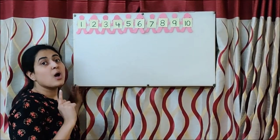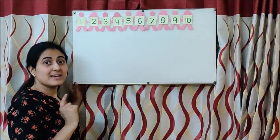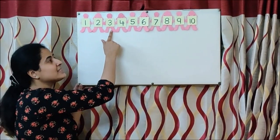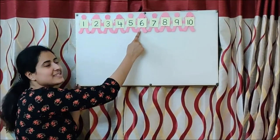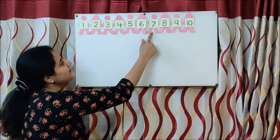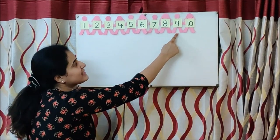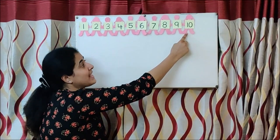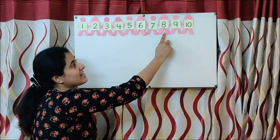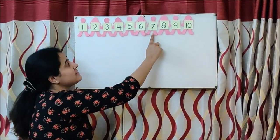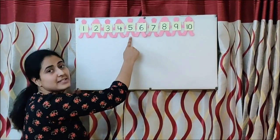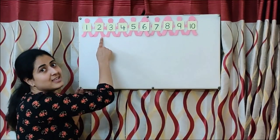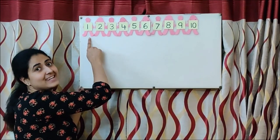So let us sing one more time, and you have to sing with me again: One little, two little, three little Indians. Four little, five little, six little Indians. Seven little, eight little, nine little Indians. Ten little, nine little, eight little Indians. Seven little, six little, five little Indians. Four little, three little, two little Indians. One little Indian girl.